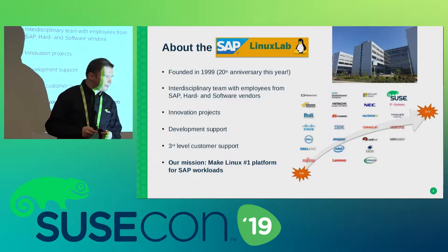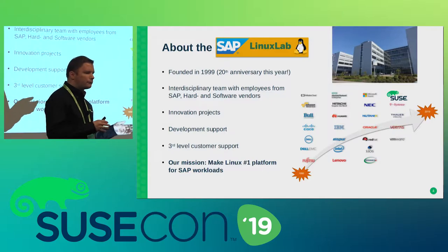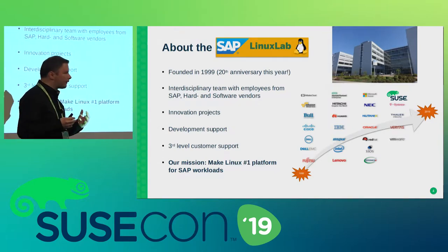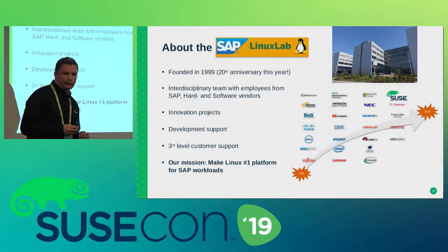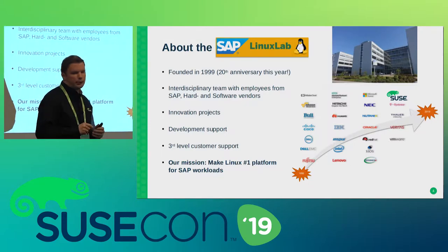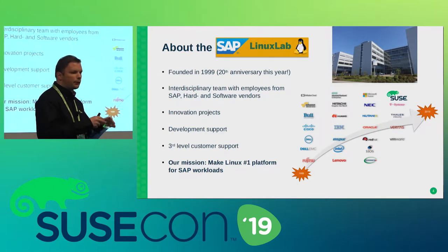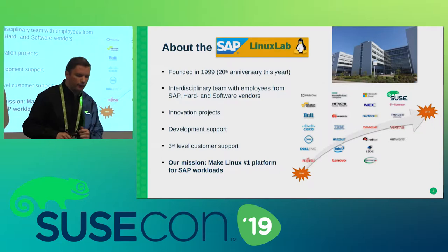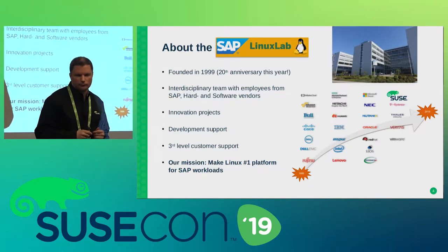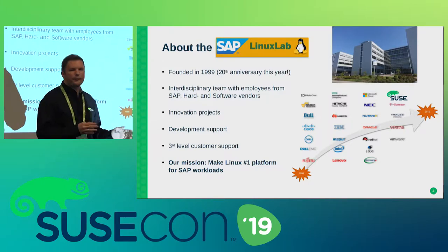What we are doing there are basically three things: innovation projects, development support, and third-level customer support. Innovation projects means when we started in 1999 it was Linux, then containers came into the game, then cloud. Development support means we take care that the engineering departments from SAP are well connected to our engineering team — we play a bit of proxy, forwarding requests for new features or issues to our product management or engineering departments. Third-level customer support is a bit special for SUSE because we are already big enough that almost the whole support is done in our team around the world.